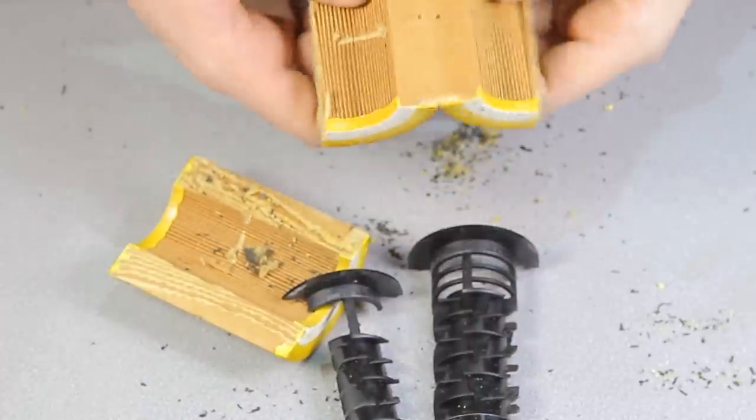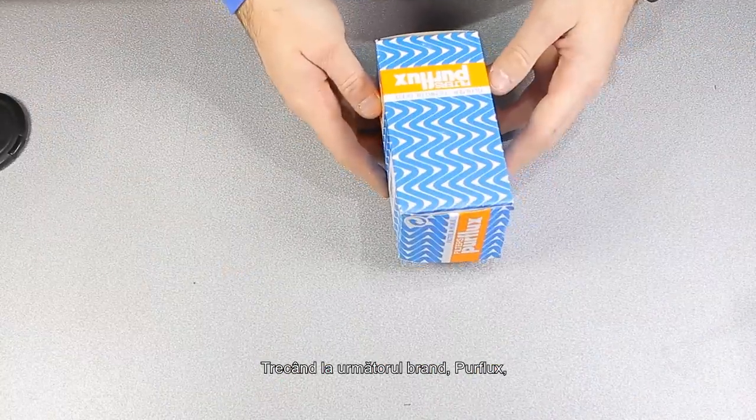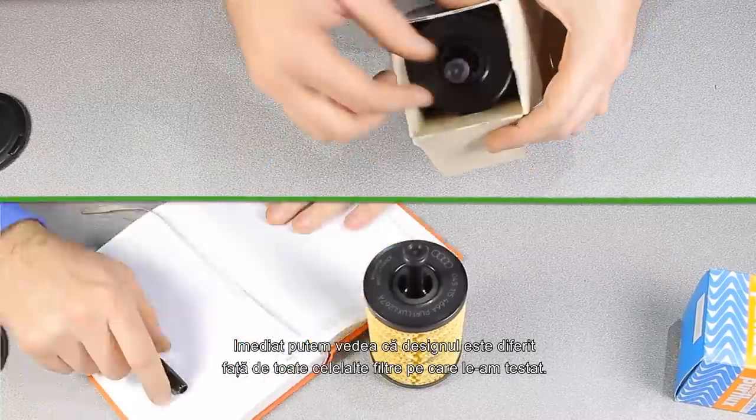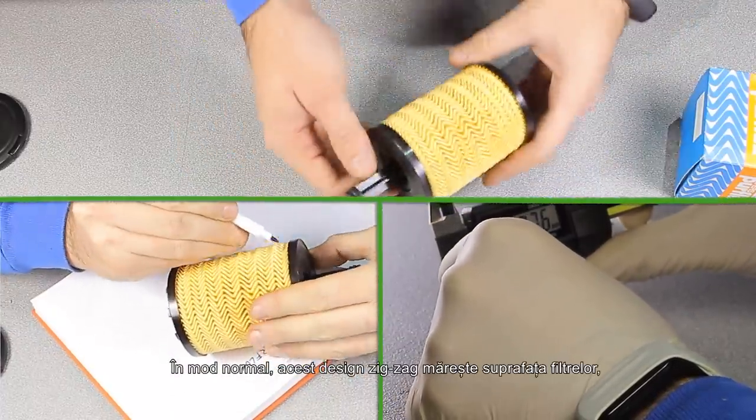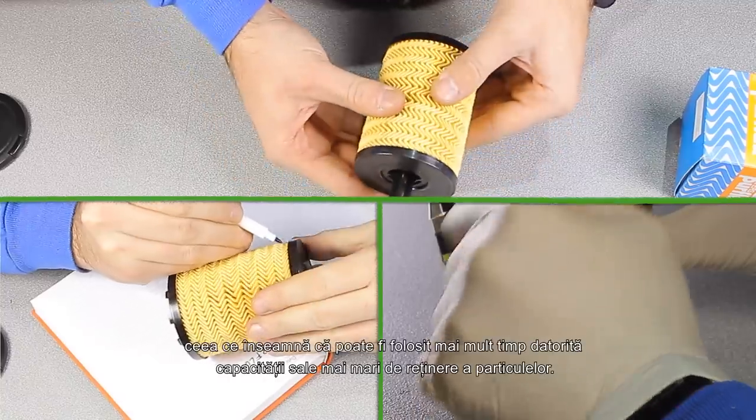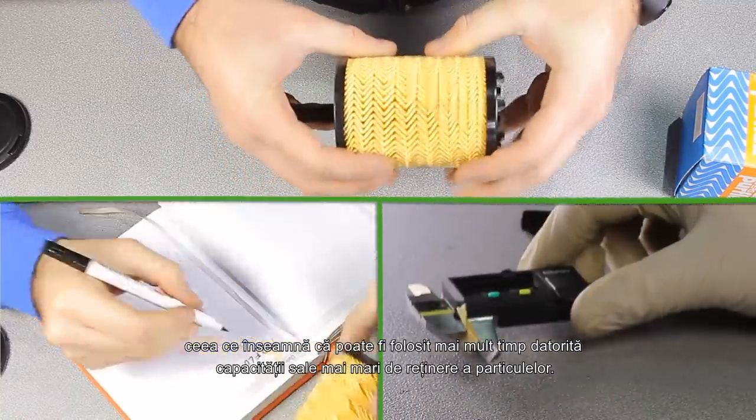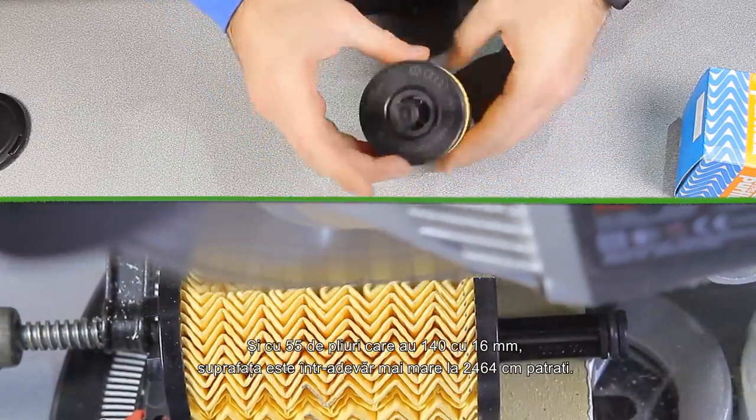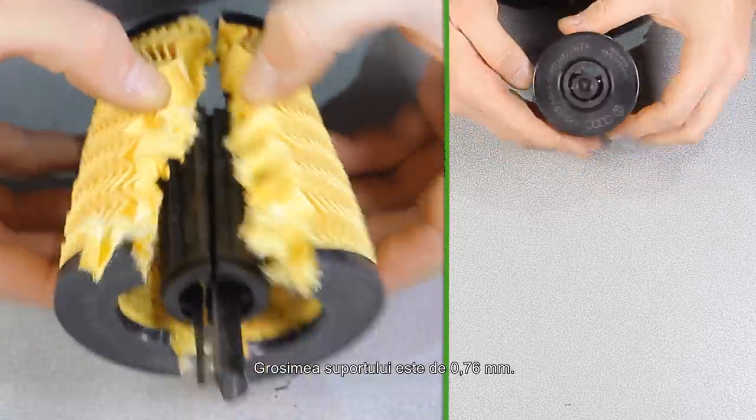Moving on to the next brand, Purflux, which is owned by Sogefi, an Italian company. Immediately we can see that the design is different from all other filters that we tested. Normally this chevron design increases the surface area of the filters, which means it can last longer due to its higher particle retention capacity. With 55 folds that are 140 by 16 millimeters, the surface area is indeed bigger at 2464 square centimeters.